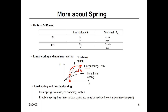An ideal spring has no mass and no damping — only stiffness — as seen in textbook problems. A practical spring has mass and damping in addition to stiffness. However, we always assume an ideal spring in problems because the mass and damping of the spring are very small compared to its stiffness, so we ignore them and still get accurate results.